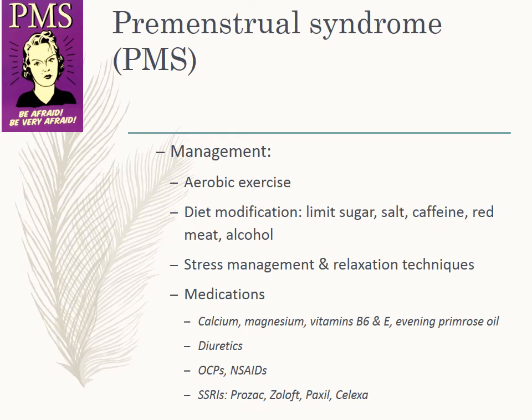Management of PMS: exercise releases endorphins. Diet modifications — limit sugar, salt, caffeine, red meat, and alcohol. Stress management and relaxation techniques. Medications may include calcium and magnesium, vitamin B6 and E, evening primrose oil — all good options. Diuretics, oral contraceptives, NSAIDs, and SSRIs such as Prozac, Zoloft, Paxil, or Celexa may be needed to manage symptoms.